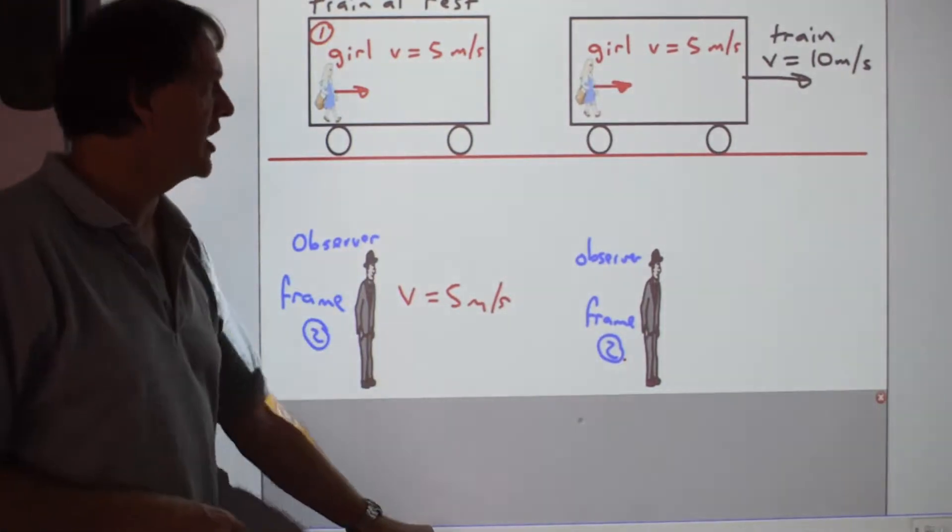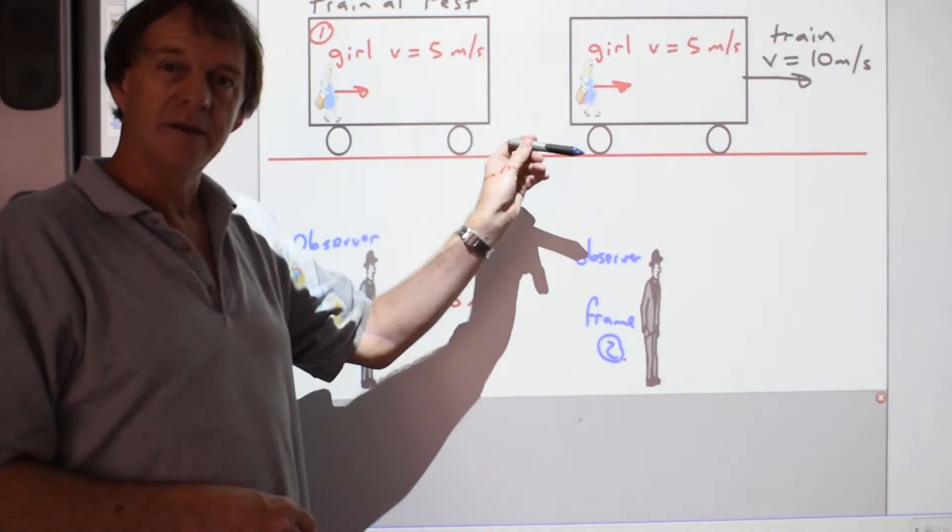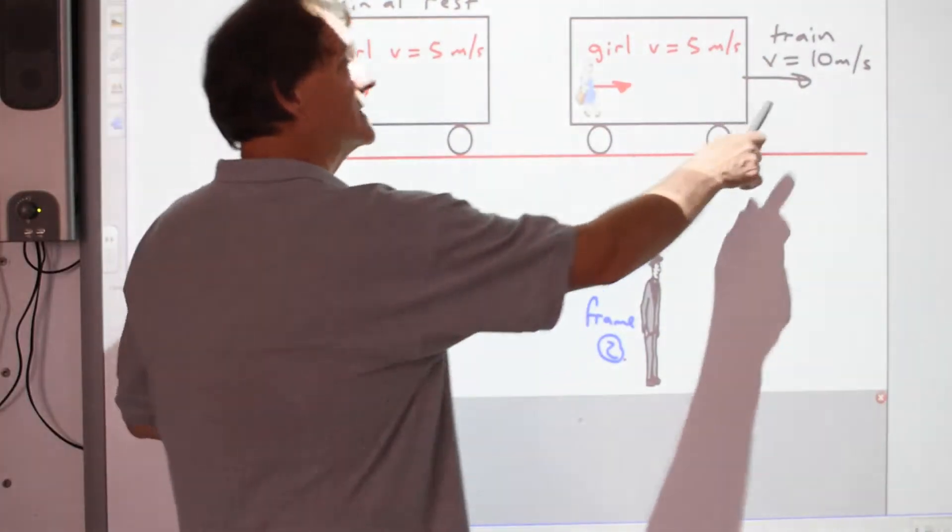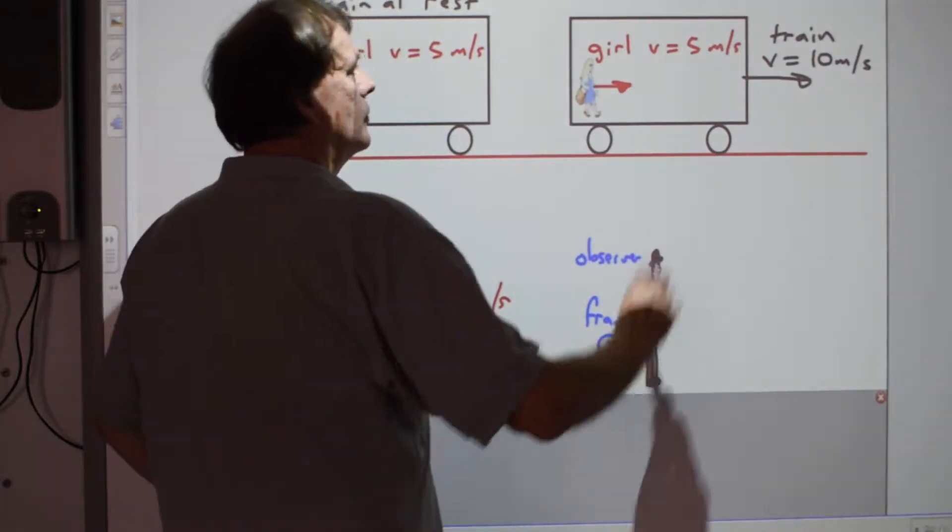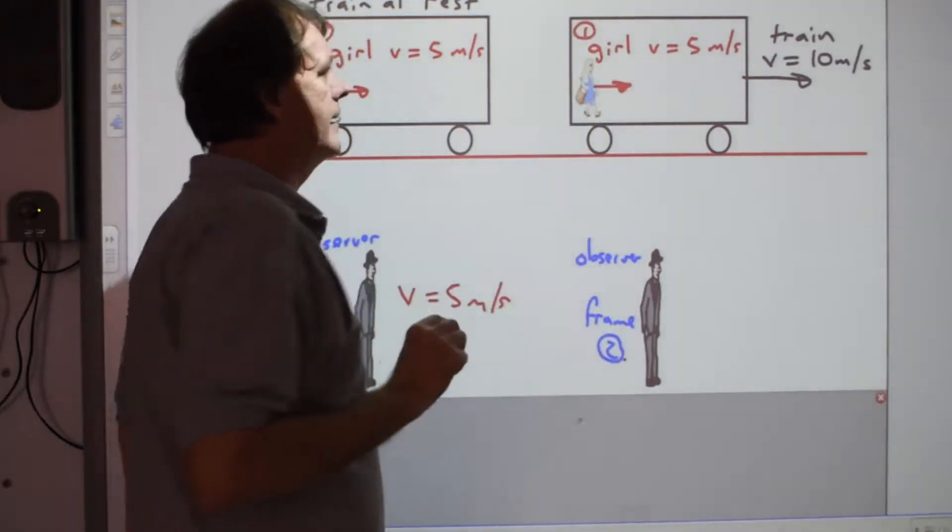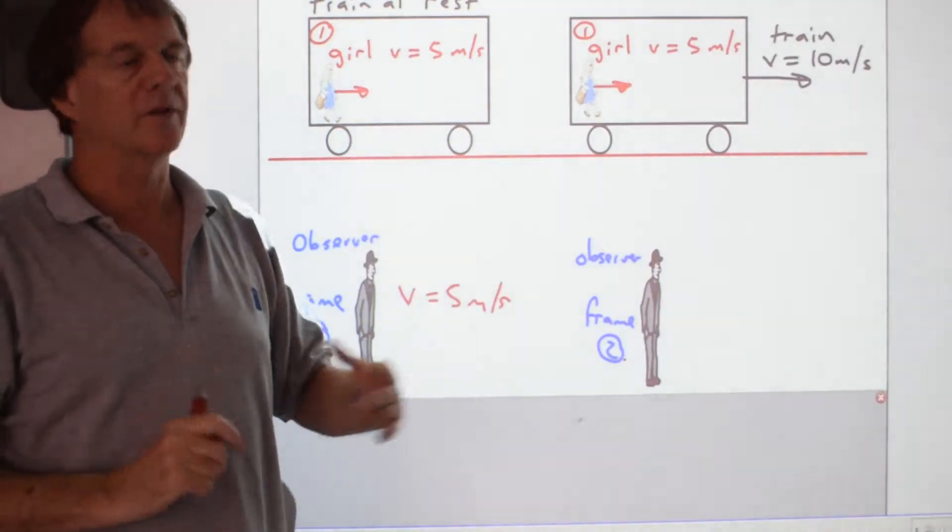However, if we now change things and move the girl's frame of reference at a steady speed, so it's still an inertial reference frame, at say ten metres per second, the girl would still record a measurement of five metres per second, same five metres travelled in one second.